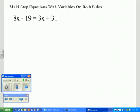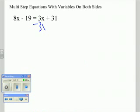This is how you solve a multi-step equation with variables on both sides. First, you subtract 3x from both sides.